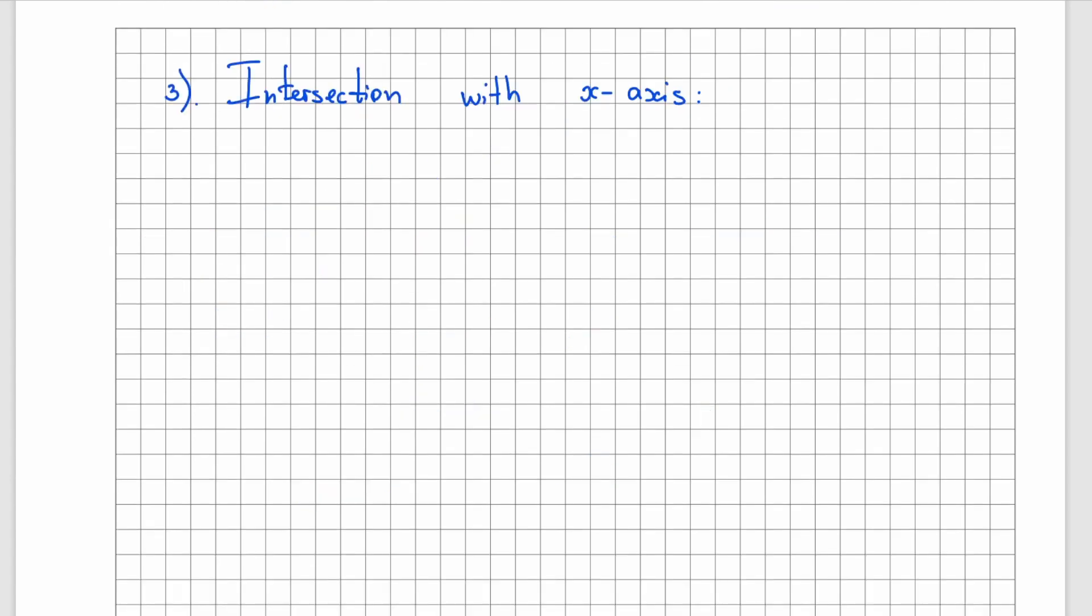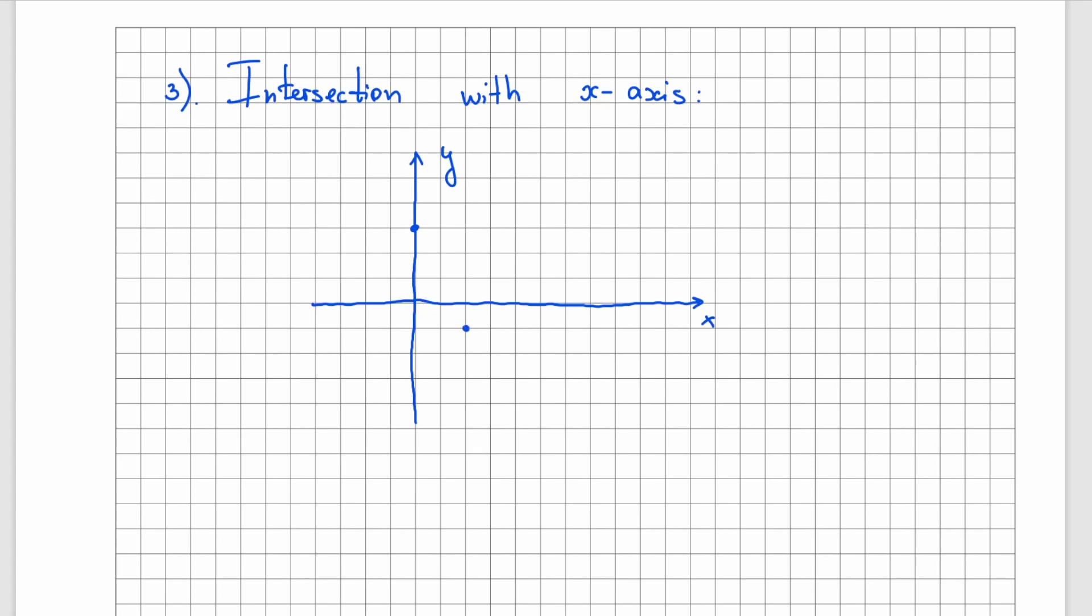Now what about the intersection with the x-axis? Let's quickly redraw our graph. Now we already know two points. The vertex, which is 2 minus 1, and the intersection with the y-axis, which is 0 and 3. And we also know that the graph opens up. So it should look similar to this, but we have no idea what intersections with x-axis are.